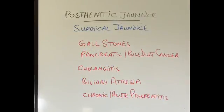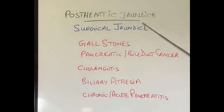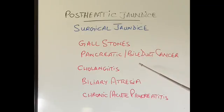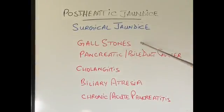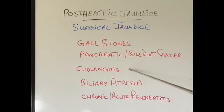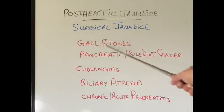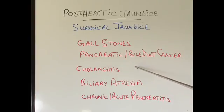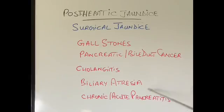Post-hepatic jaundice is also called surgical jaundice or obstructive jaundice, because many of these conditions require surgical treatment — whether through endoscopy or actual operation. A very common cause is gallstones blocking the bile duct. Pancreatic cancer or bile duct cancer, and inflammation or infection of the bile ducts — commonly caused by gallstones — can also give rise to jaundice. Other conditions include biliary atresia, where the bile ducts are not formed normally, and acute or chronic inflammation of the pancreas. Many different conditions can obstruct the bile ducts and cause jaundice.